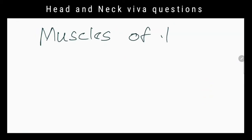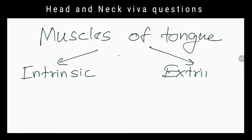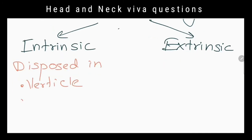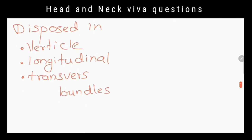What do you know about the muscles of the tongue? Intrinsic muscles alter the shape of the tongue. They are disposed in vertical, longitudinal and transverse bundles.